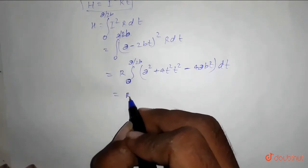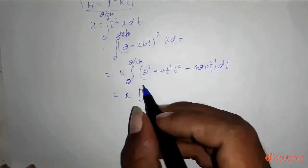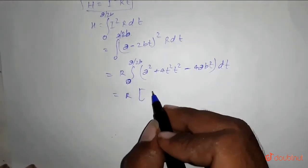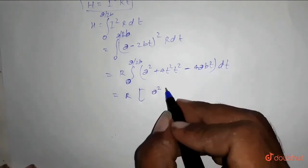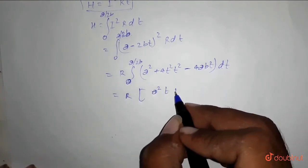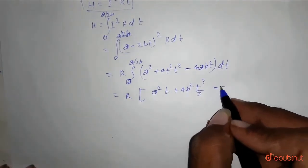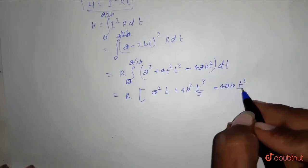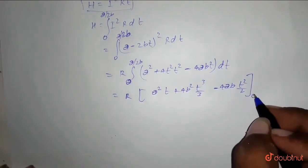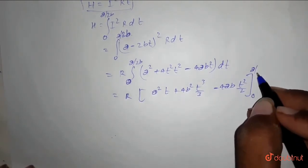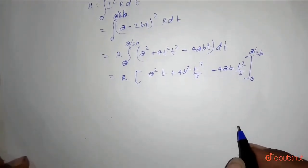So we will write it as R equals R. Integration of this part will be a square t plus 4b square t cube by 3 minus 4ab t square by 2, from 0 to a by 2b. This is the range.